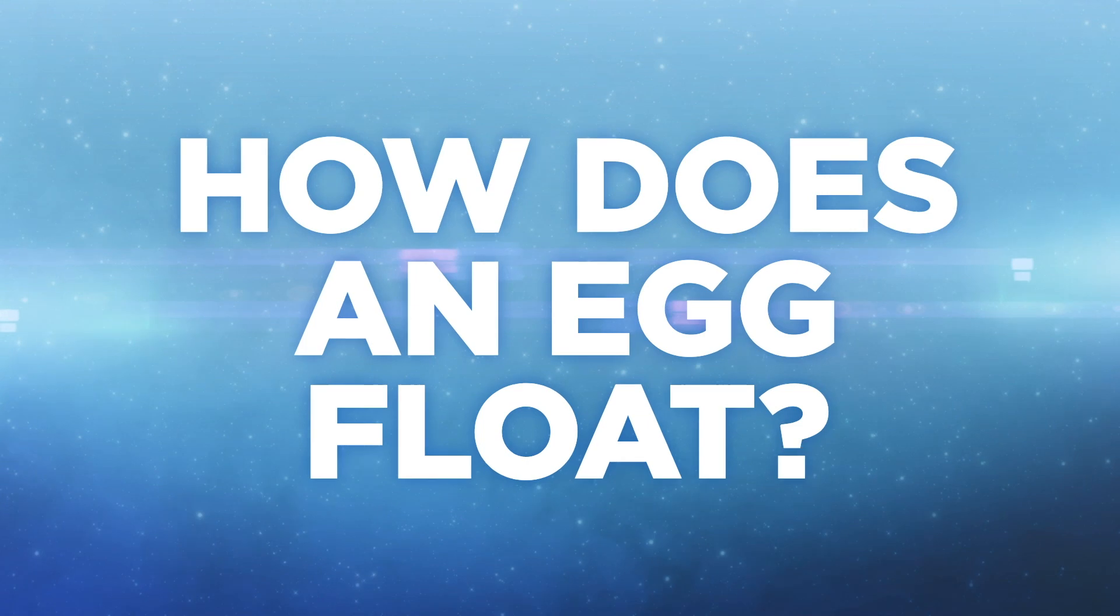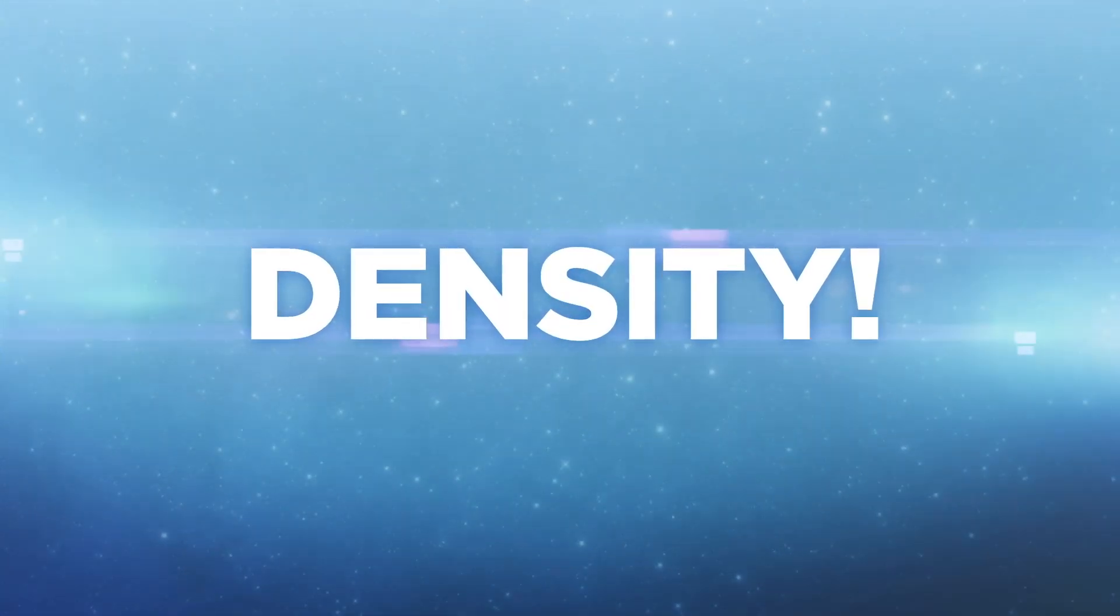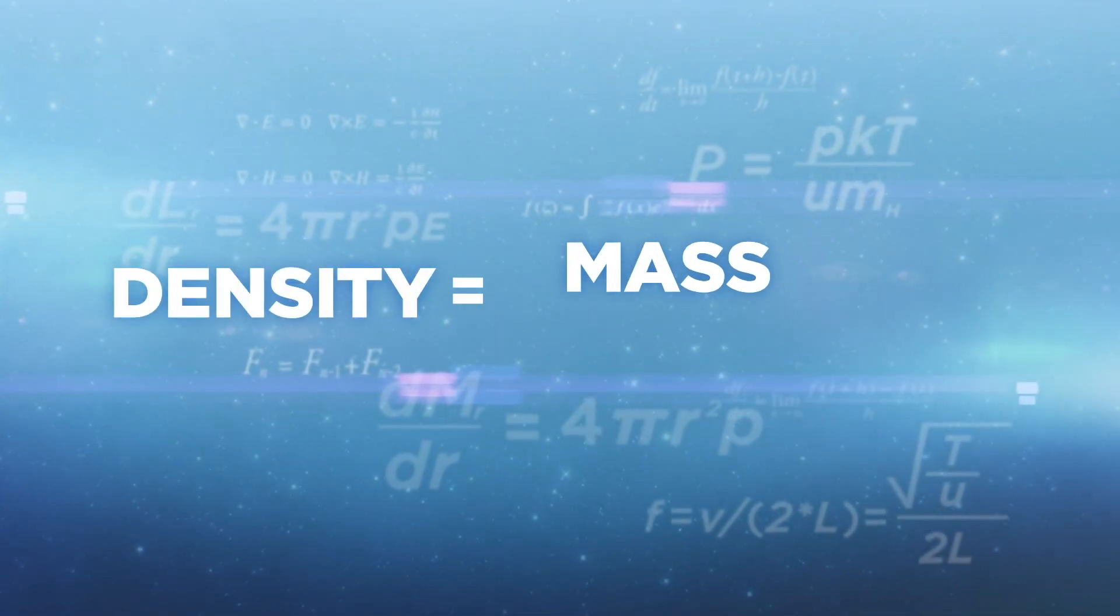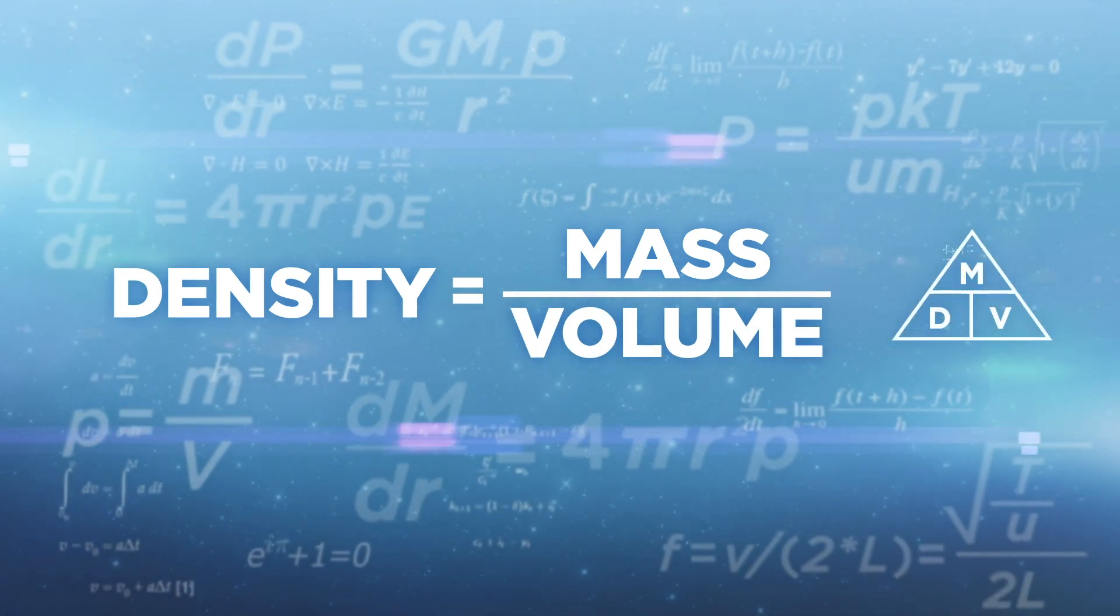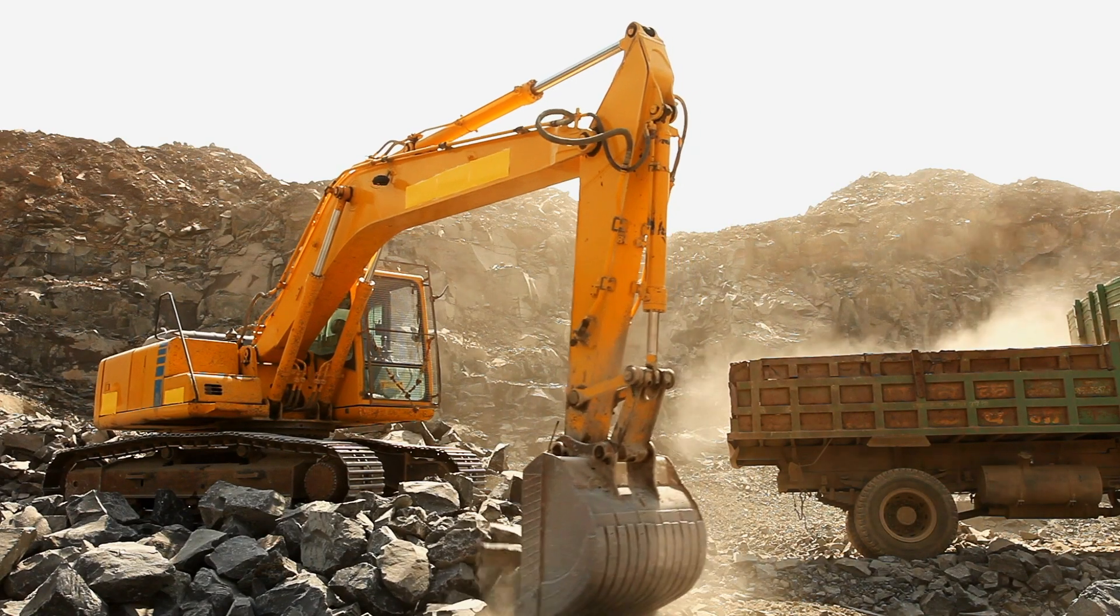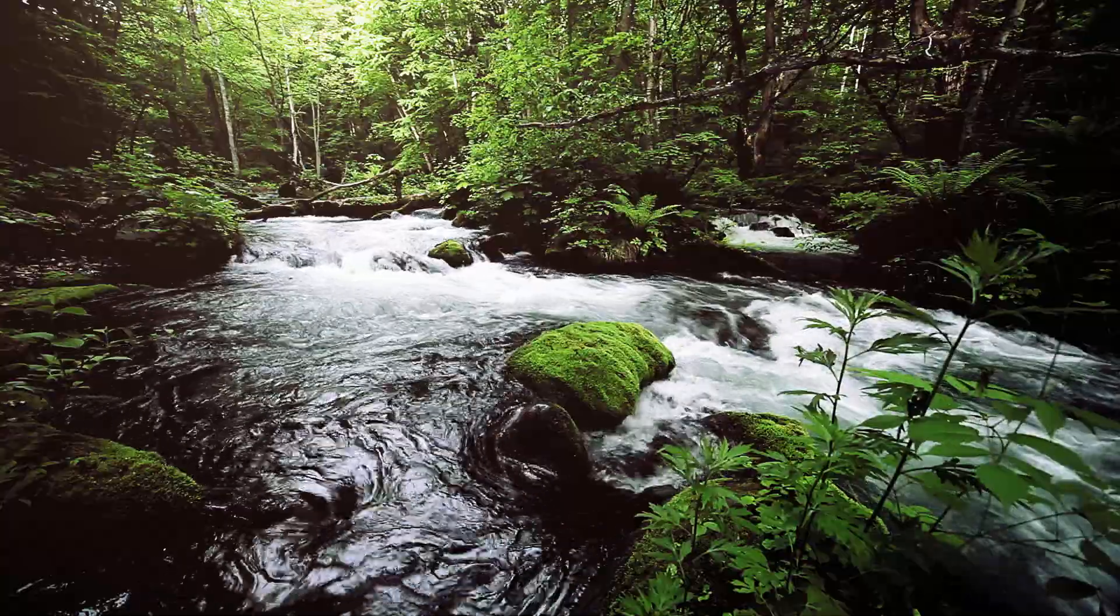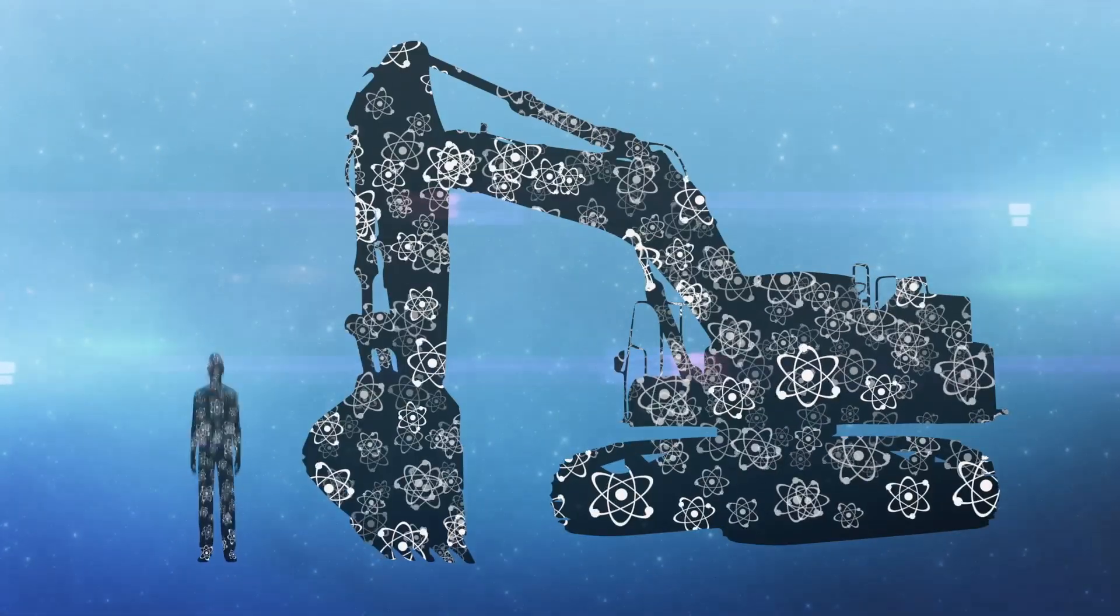how does an egg float? Short answer: density. Density is a measurement that compares the amount of mass an object has compared to its volume. So it helps us to figure out how full of atoms an object is. Remember, atoms are the basic unit of matter in everything.